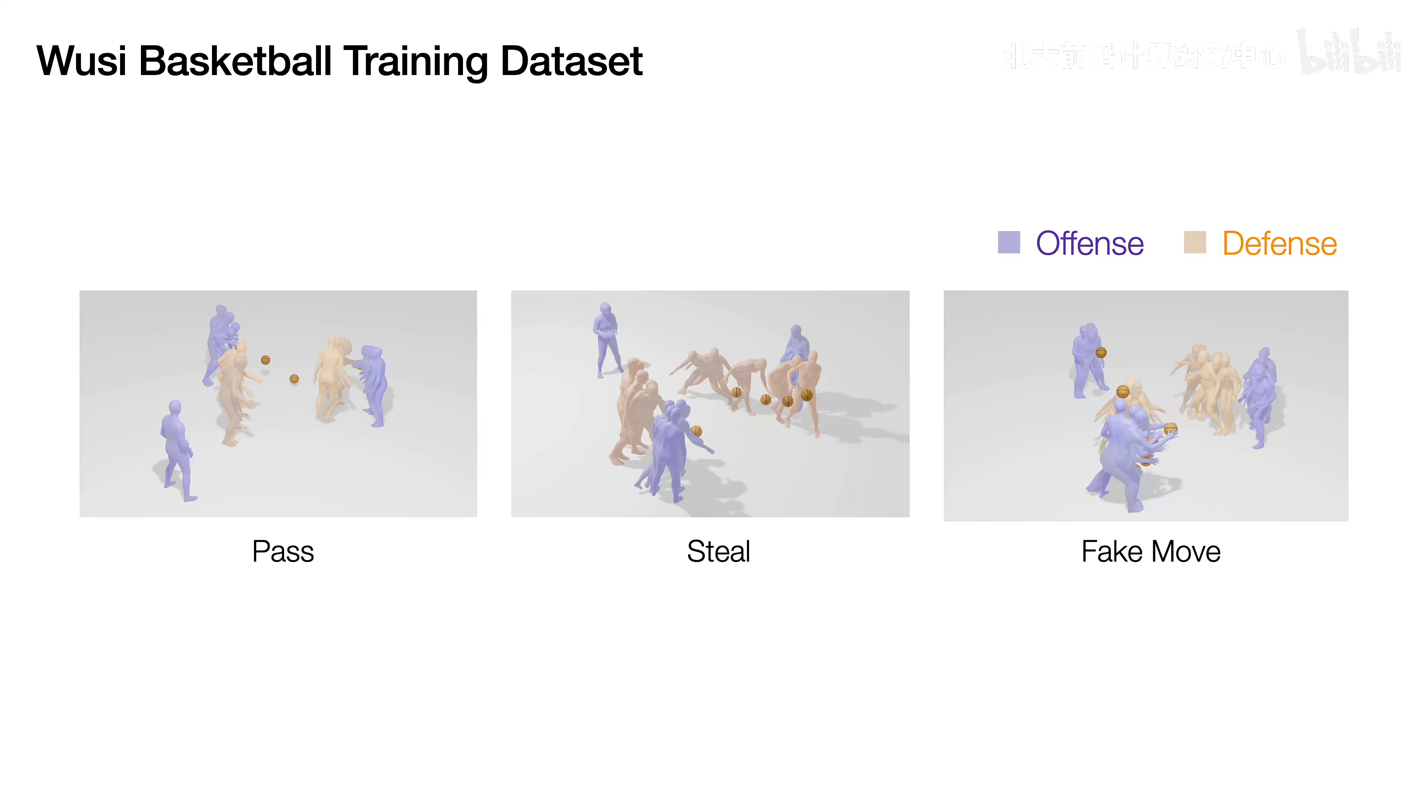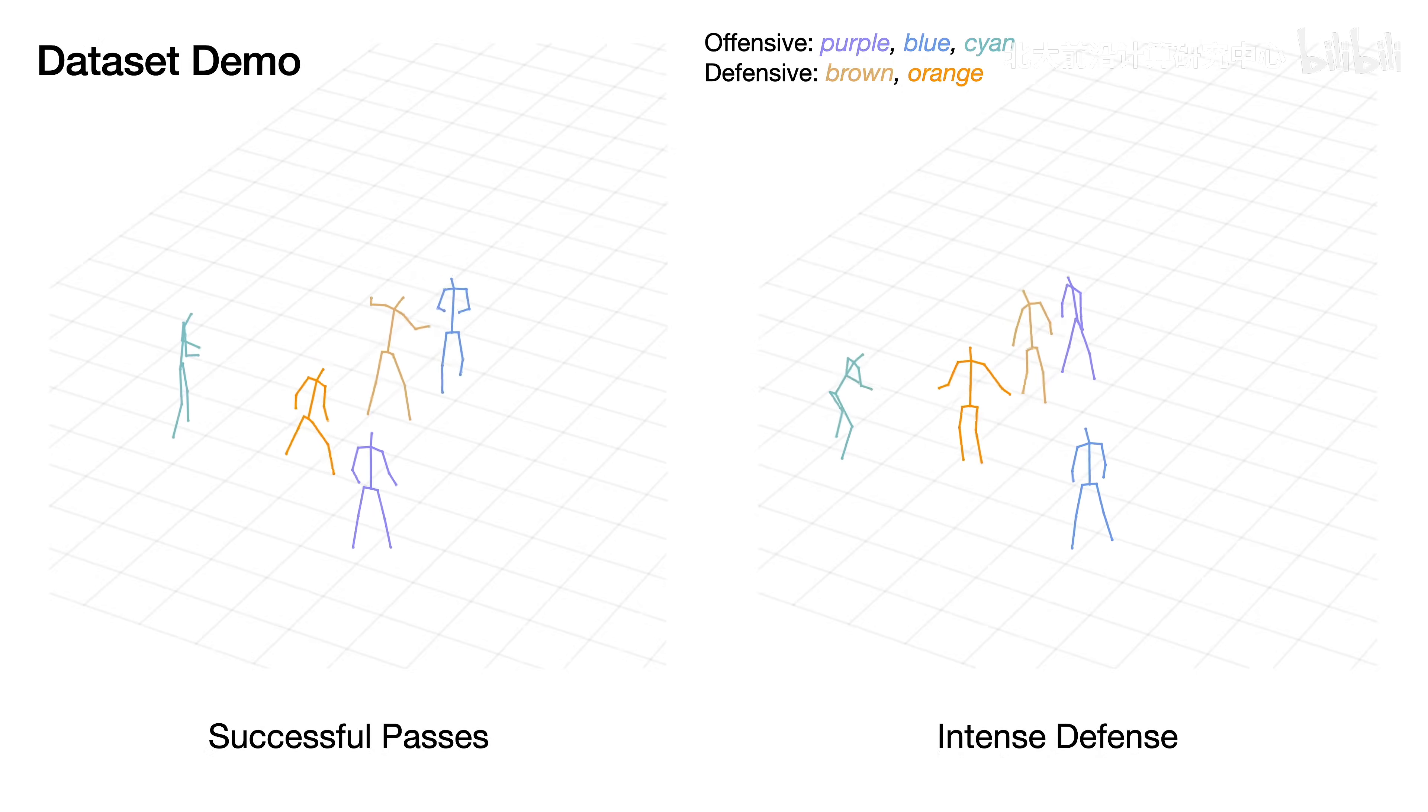Here are some example motion sequences. On the left, the offensive players execute a sequence of successful passes. On the right, Player Brown makes a jumping motion while defending.